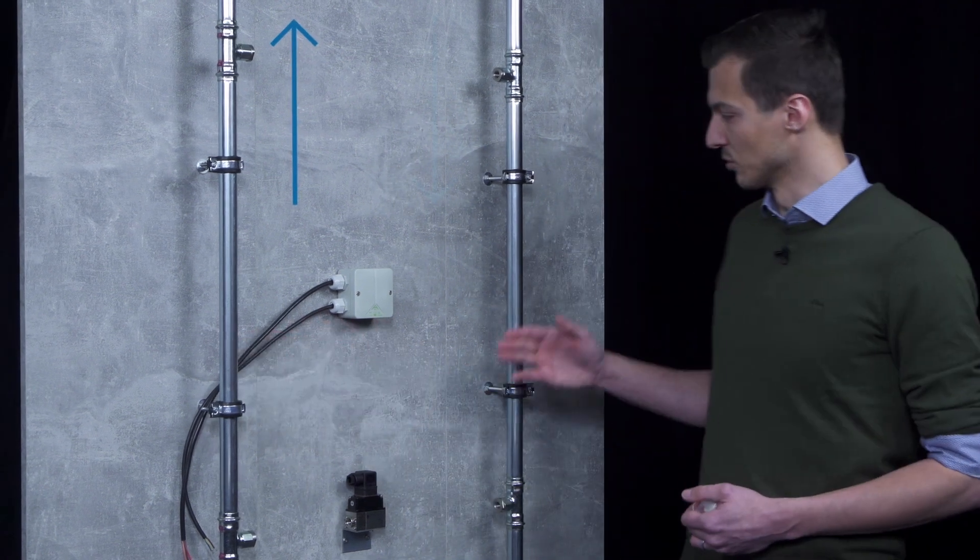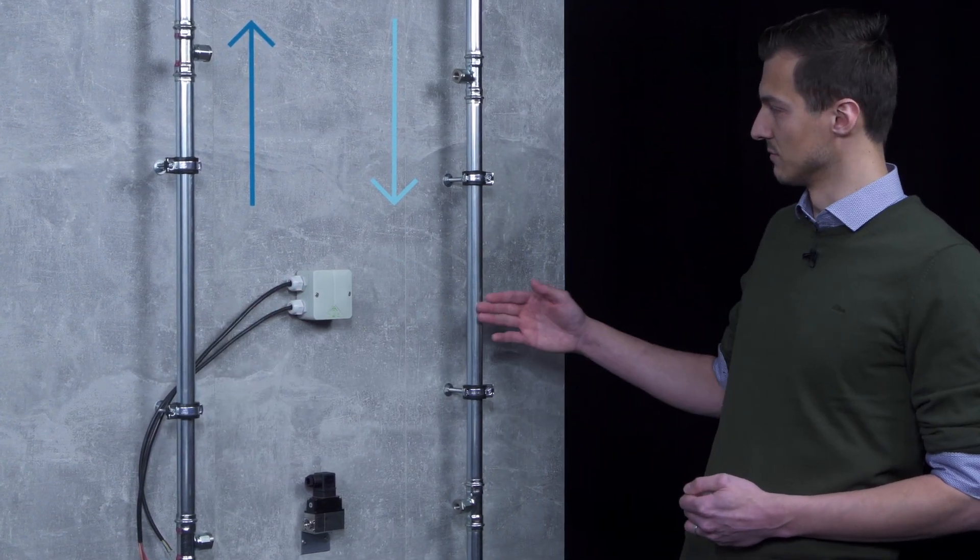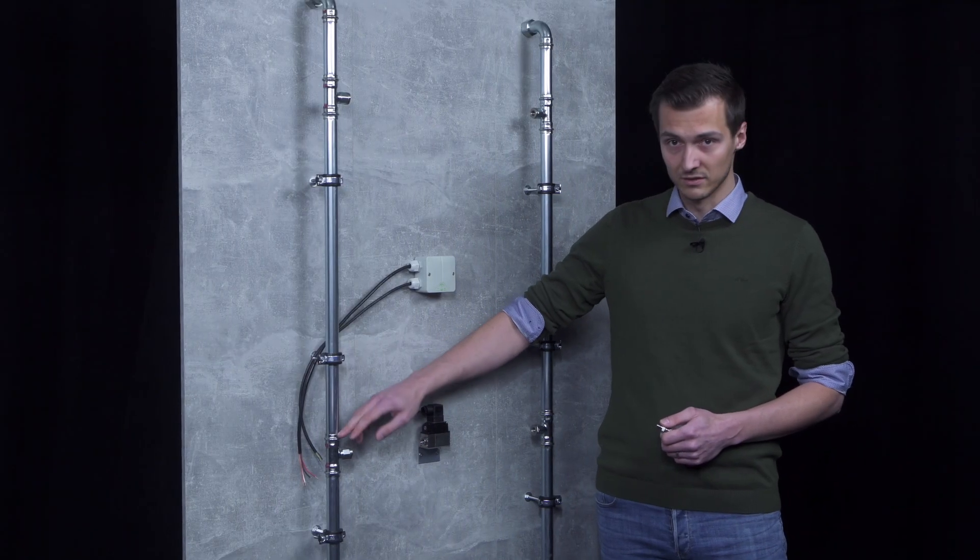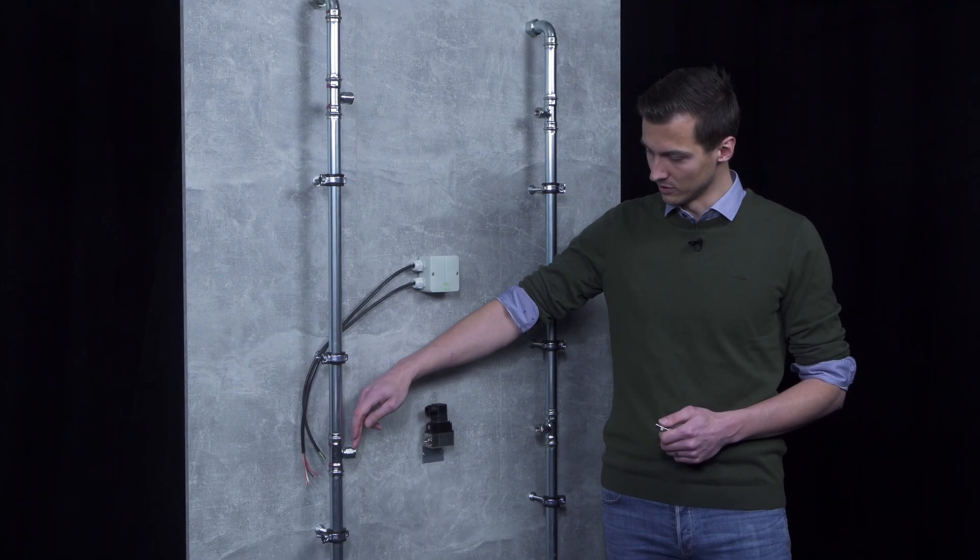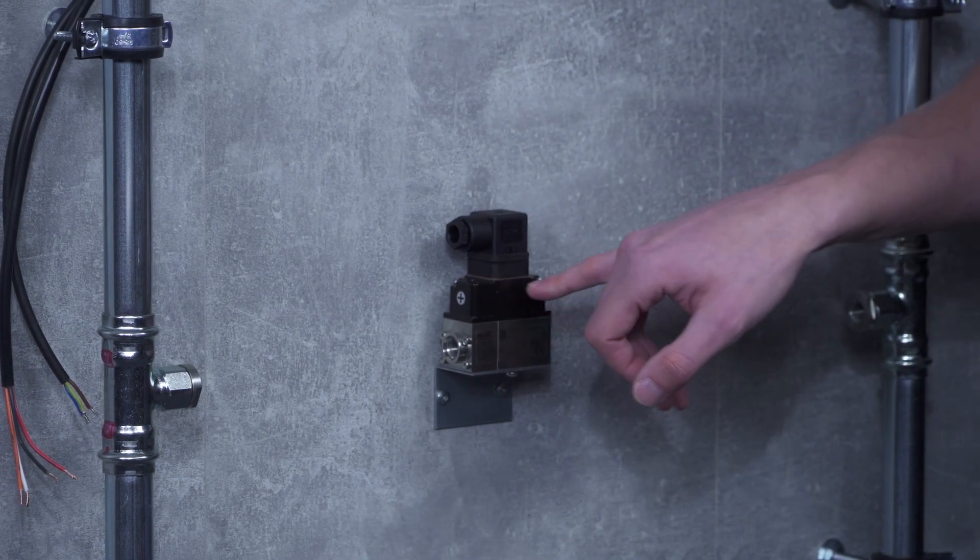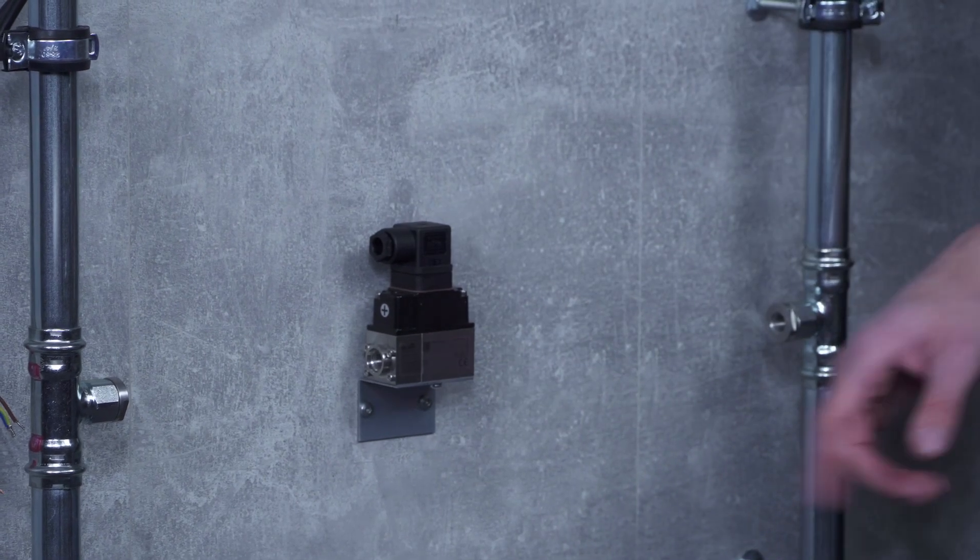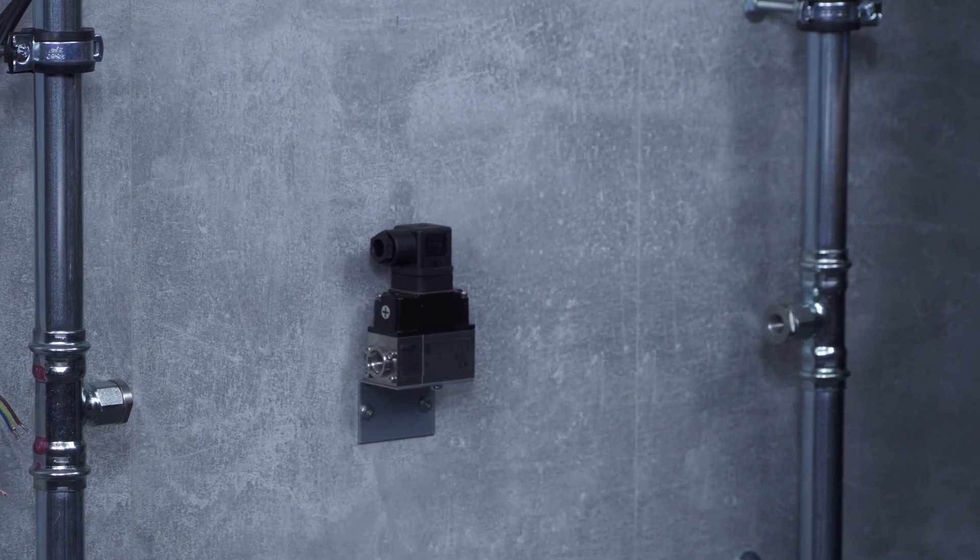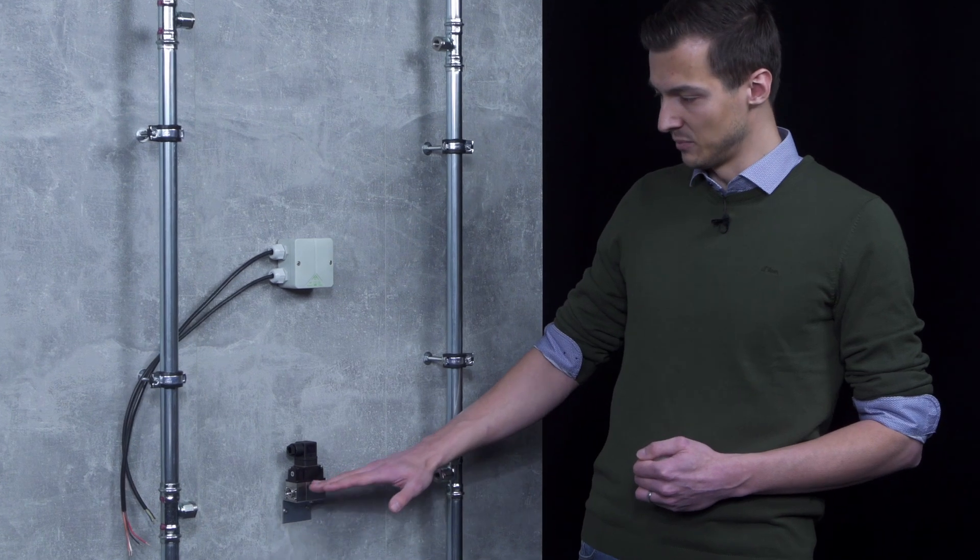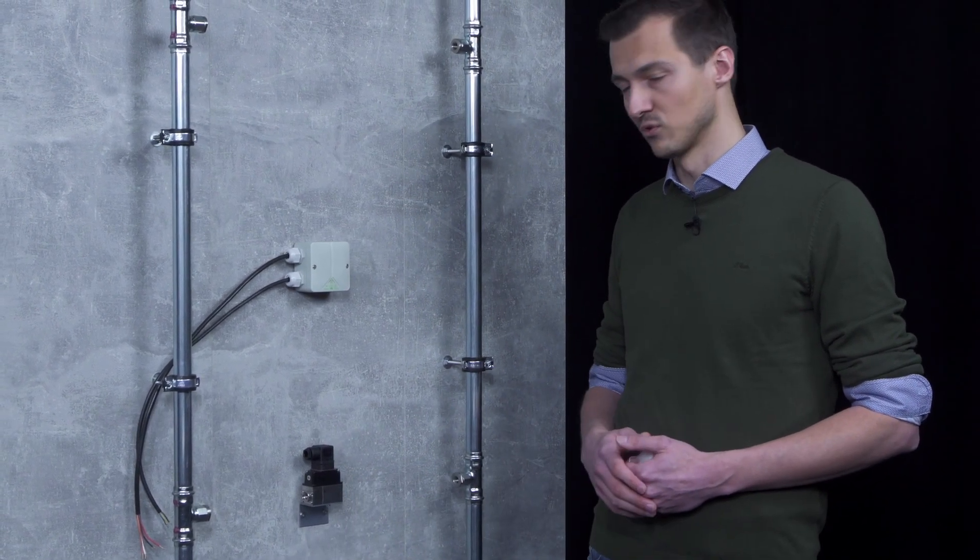To show you how to install our differential pressure sensors, we have prepared a demo wall here. This consists of a supply and a return or a pipe with expected higher pressure and a pipe with lower pressure. We have already fitted matching T pieces here with a quarter-inch internal thread. One thing to note here is the orientation of the WDP, marked by the plus and the minus symbols. The plus should point to the supply or the line with the higher pressure, the minus to the line with the lower pressure. It should also be noted that the WDP is either at the same height as the T pieces or below them to facilitate venting of the system.